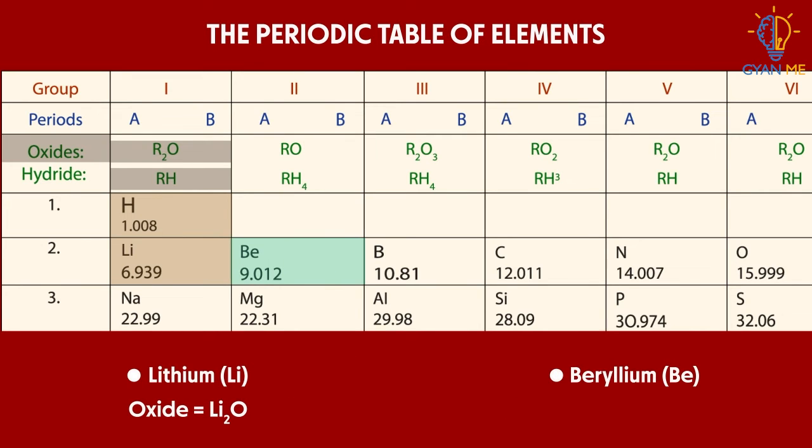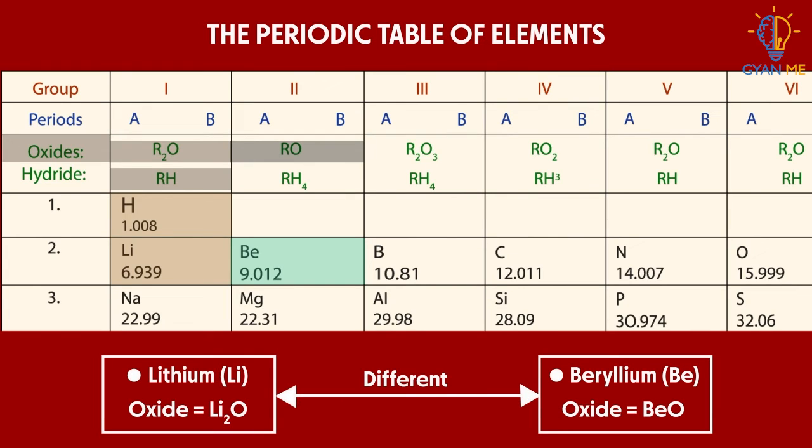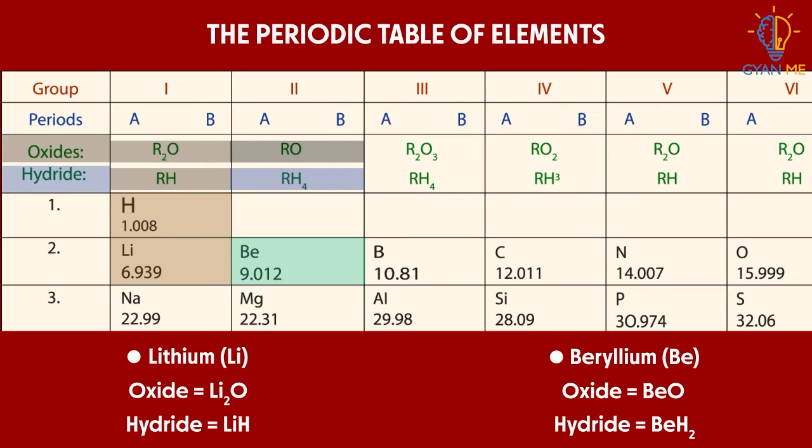He then placed beryllium next to lithium. Because the oxide of beryllium is different from that of the lithium. It is BeO. And the hydride of it is BH2.